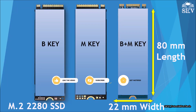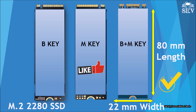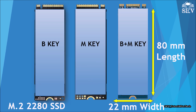Before purchasing an M.2 SSD, it's crucial to verify its compatibility with your motherboard and ensure it fits the available slot. Consider the form factor — 2280 is the most common size: 22mm width, 80mm length, with a PCIe or SATA interface. Also assess your storage needs; 500GB is a good starting point for most users.